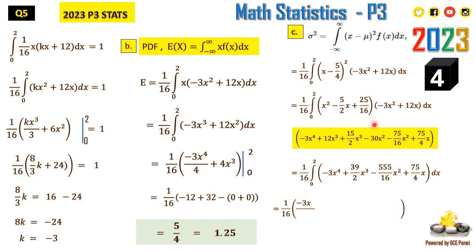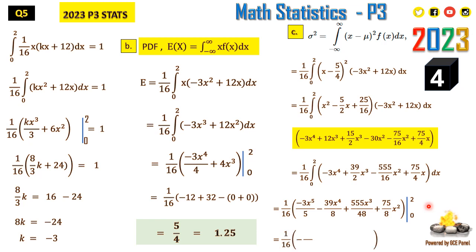After simplifying and integrating, the result is (1/16) × [−3x⁵/5 − 39x⁴/8 + 500x³/48 + 75x/8] evaluated from 0 to 2, which gives (1/16)(−96/5 − 78 + 555/6 + 75/2). This simplifies to approximately 2.05. So the variance of X is 2.05.